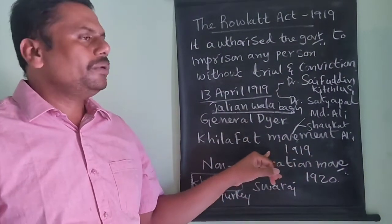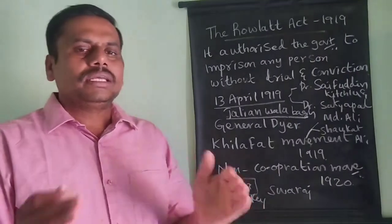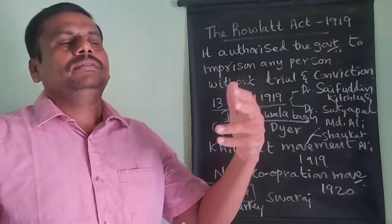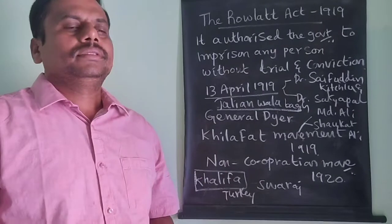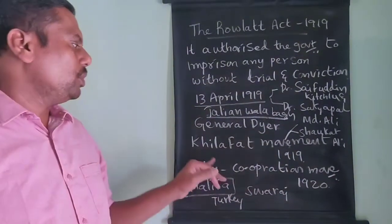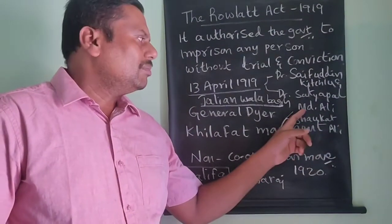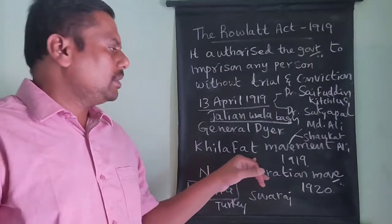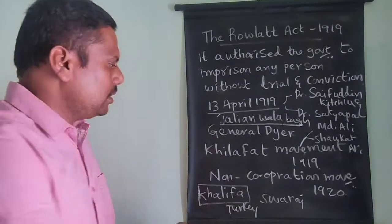In 1919, the post of Khalifa — the head of the Islam community, that is the Sultan of Turkey — was cancelled. Muslims living in India decided to launch a movement against the British called the Khilafat Movement. This movement was particularly led by two important people, Muhammad Ali and Shaukat Ali. Mahatma Gandhi also extended his complete cooperation to the Khilafat Movement, and in 1920 he decided to launch another movement called the Non-Cooperation Movement.